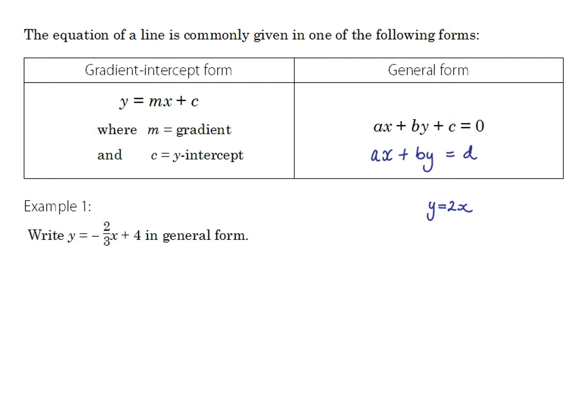That is the definition of gradient: as x increases by 1, how does y change? The value in front of the x — the coefficient of x — is what affects the gradient. And for the y-intercept, that's where the graph crosses the y-axis, i.e., where x equals 0. Substituting x equals 0 makes the mx term zero, so y equals c. That c value gives us the y-intercept, making this a very useful form for visualising the graph.